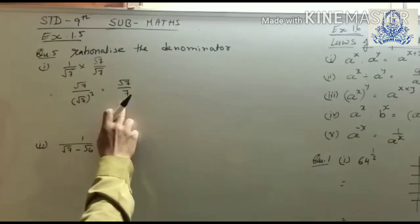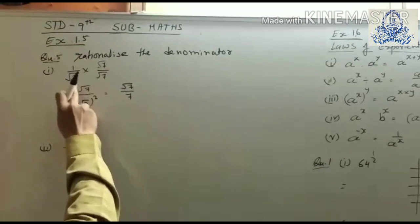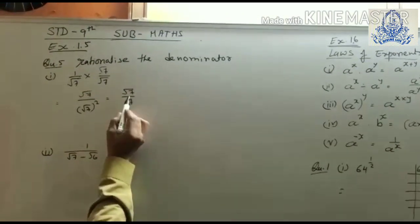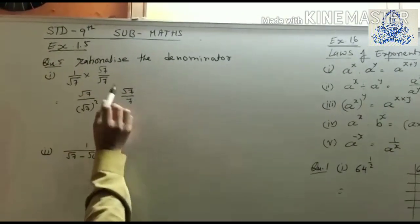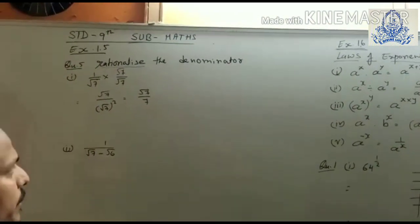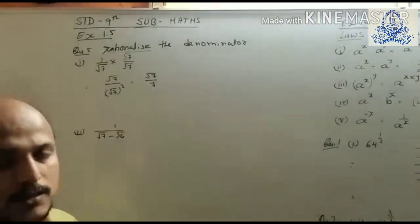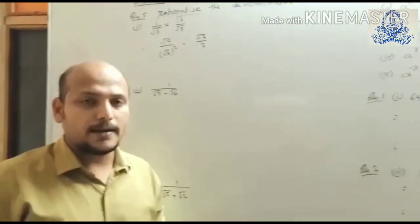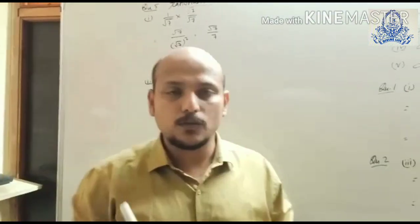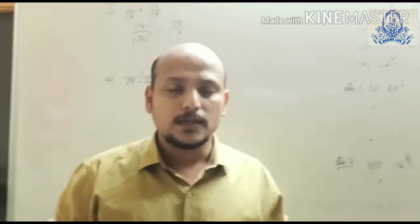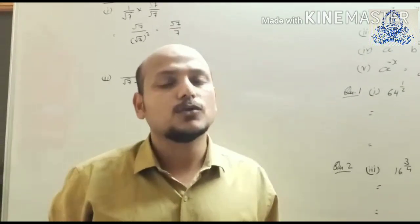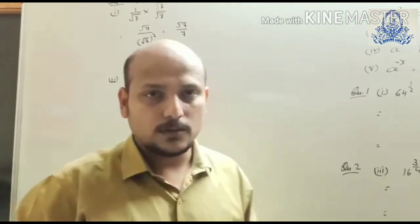Here we converted root 7 into 7, and this 7 is a rational number. This is the pattern of the question — whatever number is under the root in the denominator, we have to remove that root.